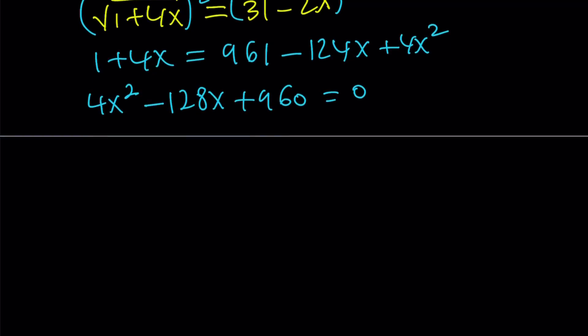Let's put everything on the same side. It gives us 4x squared minus 128x plus 960 equals 0. Everything is divisible by 4. We get x squared minus 32x plus 240 equals 0. Our goal is to find two numbers whose product is 240 and whose sum is negative 32. Those numbers are 12 and 20. We can write this as x minus 12 times x minus 20 equals 0.